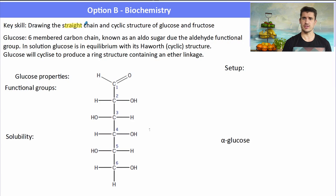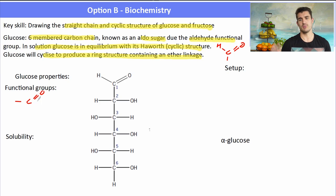So one of the key skills is drawing the straight chain and cyclic structures of glucose and fructose. Glucose is a six-membered carbon chain which is known as an aldo sugar because it has the aldehyde functional group. In solution, glucose is in equilibrium with its Haworth or its cyclic structure. And glucose will cyclise to produce a ring structure containing an ether link. And an ether is a C bond O bond C.